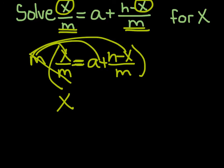So now if I distribute it to the first one, they cancel out, and I get x equals, and then m times a would be ma, and then times the second group, the m's would cancel, and I'd have plus h minus x.